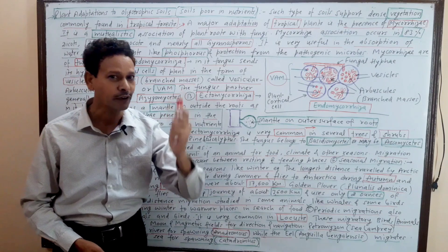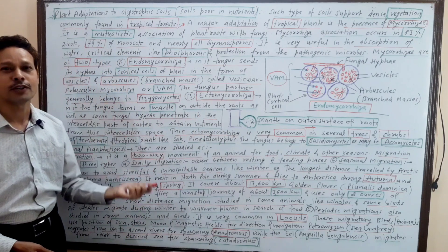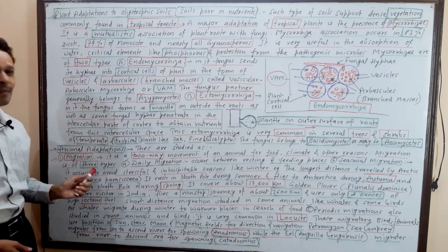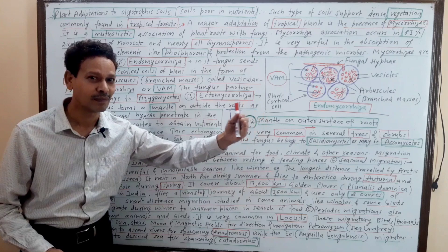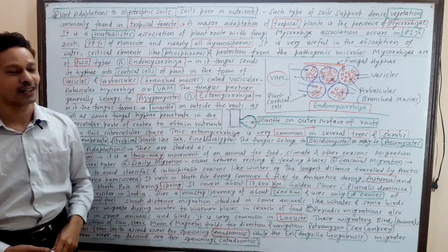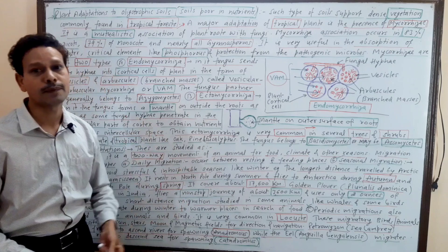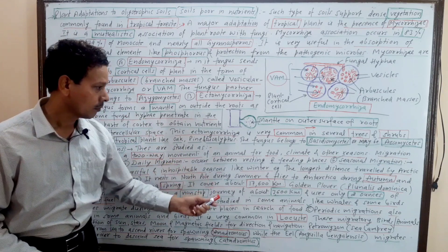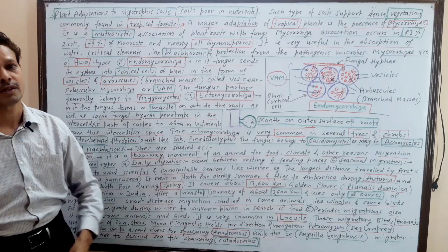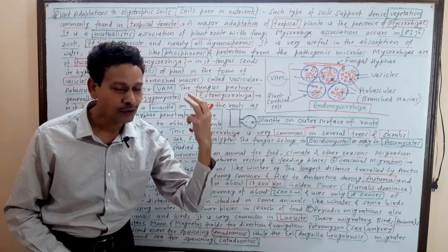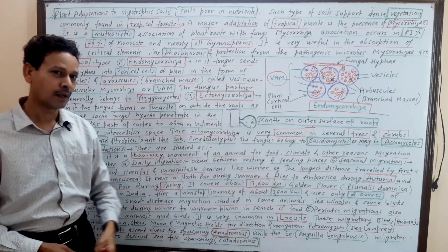Now plant adaptations are over. I will discuss animal adaptation. Students have been requesting - please discuss animal behavior adaptation. Today I will discuss animal adaptations. First of all, I will cover migration. Migration - it is two-way movements: outward means emigration, inward immigration. Migration can be of three types: daily migrations, seasonal migrations, and periodical migrations.